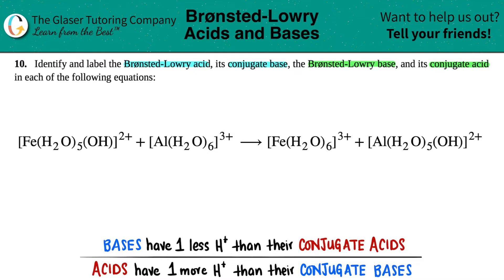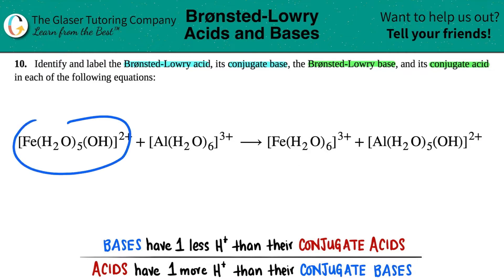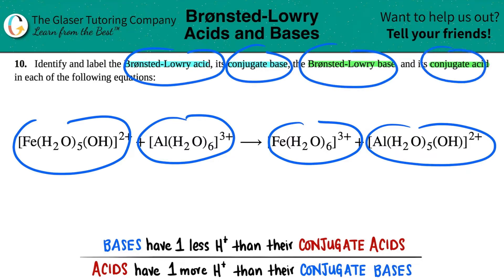And then we have this whole big mess of an equation, but just know that there are four parts — one, two, three, and four. These four parts will link up with these four identifiers. So we just basically have to find out which one is the Bronsted-Lowry acid, which one is the conjugate base, which one's the Bronsted-Lowry base, and the conjugate acid.